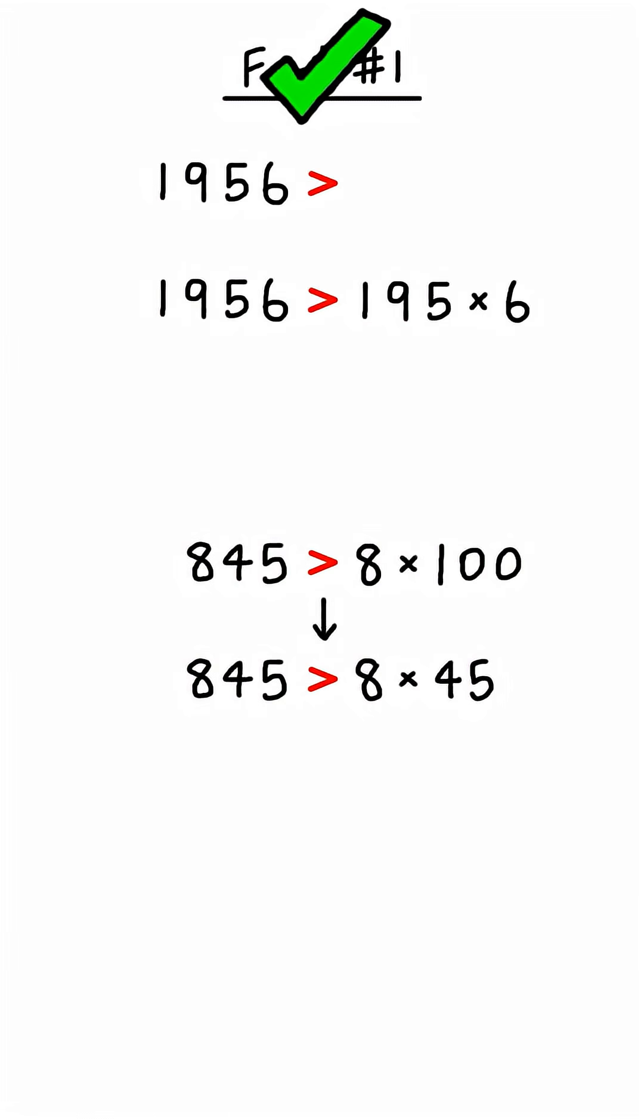1956 is greater than 1950, which equals 195 times 10, so it must also be greater than 195 times 6. You can repeat this process again and again to split the number as far as you'd like.